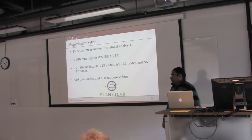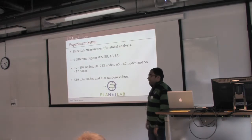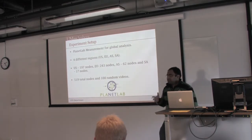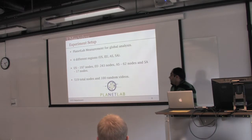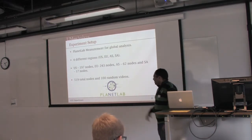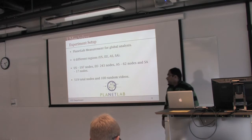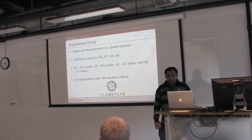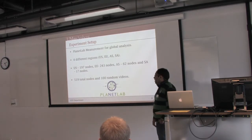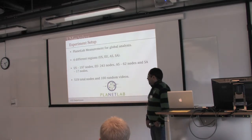To answer these questions, we performed a global analysis on related list differences using the PlanetLab distributed testbed. We took all active PlanetLab nodes and divided them into four global regions: US, Europe, Asia, and South America. At the time of measurement, we had 197 US nodes, 230 in Europe, 62 in Asia, and 17 in South America — about 519 total nodes. On each node, we requested 100 random videos from a trace and collected the related videos offered by YouTube for each video.